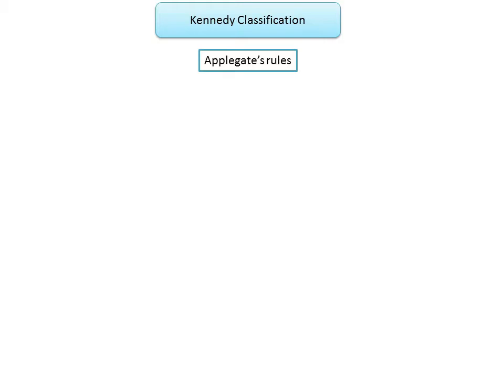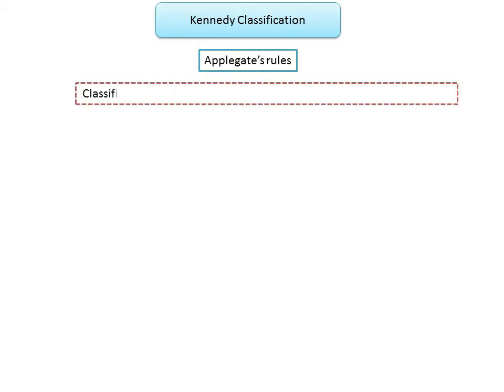Moving on to the rules for classification: Applegate, Swenson, and Tercla have suggested rules to apply to the Kennedy classification system in order to eliminate some uncertainties and make the classification more descriptive. Rule 1: classification should follow rather than precede extraction that might alter the original classification.